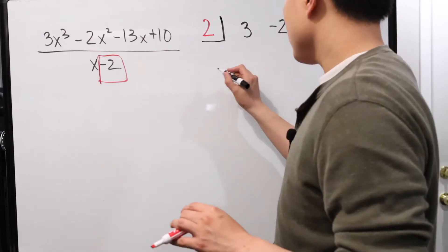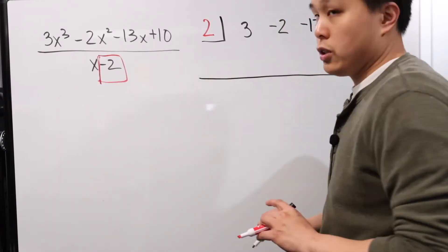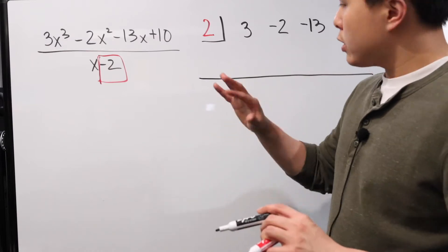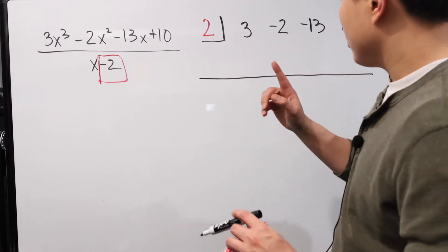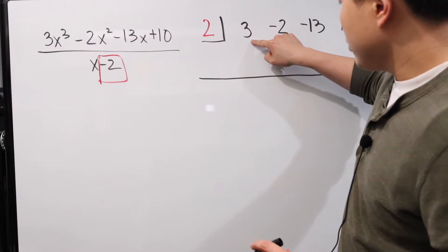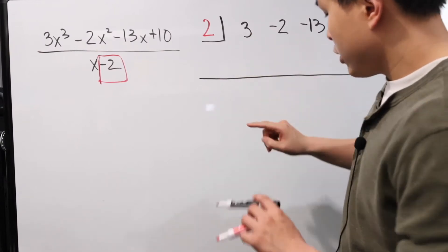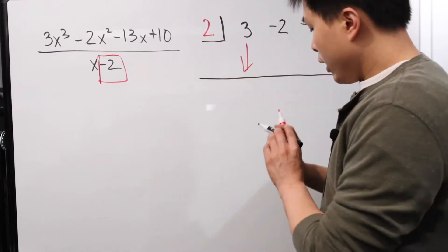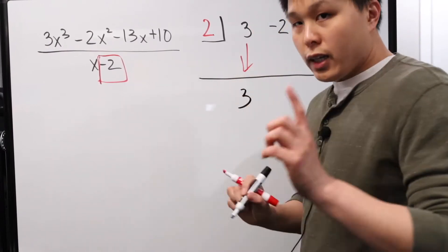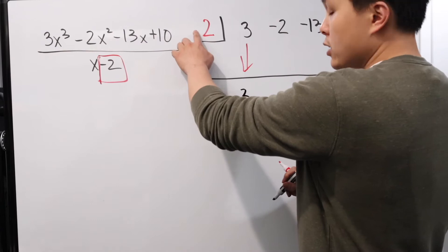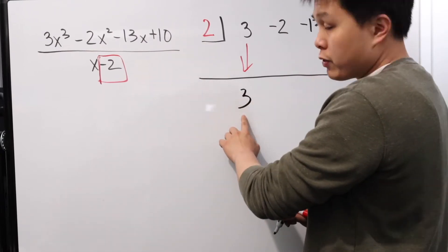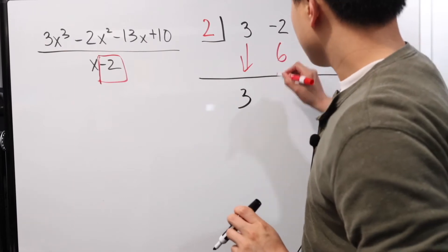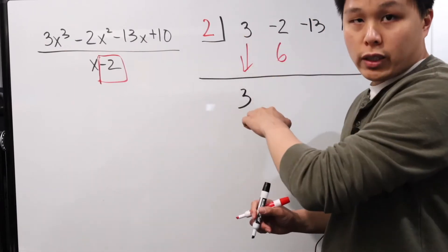In order to carry out synthetic division, the process is fairly simple. You go one at a time and it's a little different because you're not really subtracting. So here you have three — you just bring this straight down, and you have a three here. The next thing you do is multiply this number by the result: two times three is going to be six, so technically six right here.